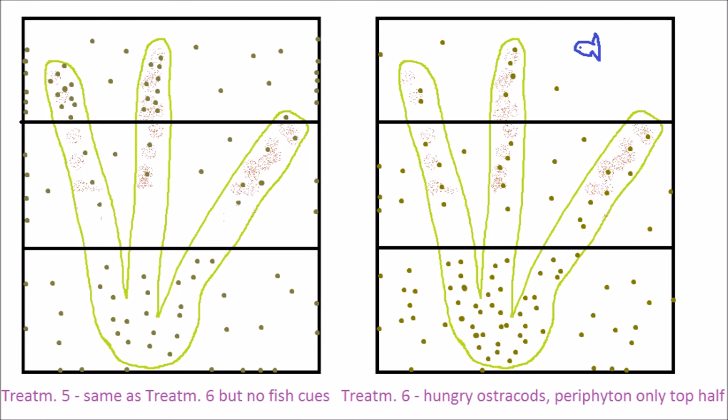The last comparison is between treatments 5 and 6. In both cases, the periphyton food is only on the upper part of the Chara. In treatment 5, there's no fish water, and hence less inhibition against going toward the top of the Chara. As you can see, the ostracods spent more time in the upper zone in the fish-cue-free water of treatment 5.